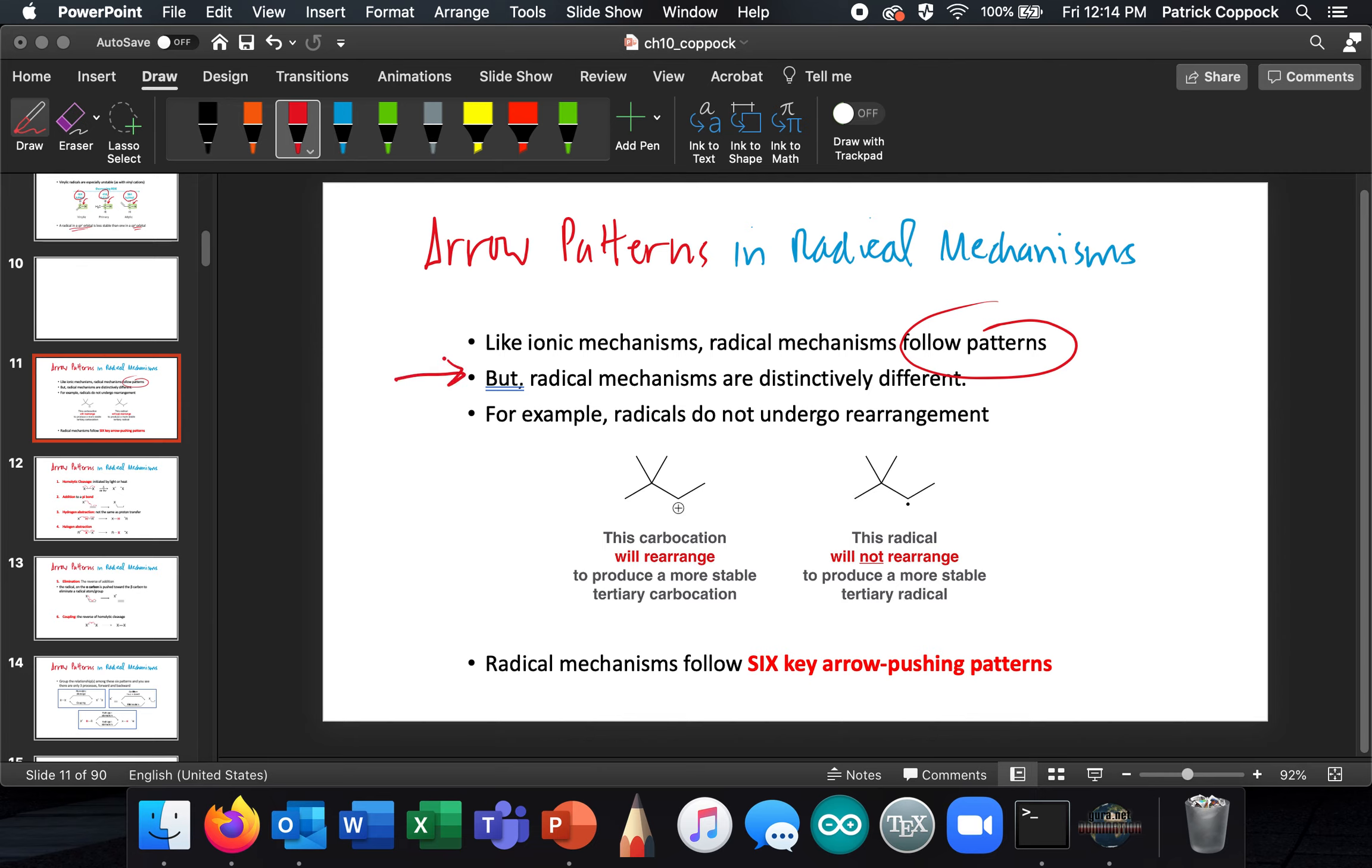Now there's some important differences. Radical mechanisms don't, for example, rearrange. So carbocations rearrange, radicals do not rearrange.